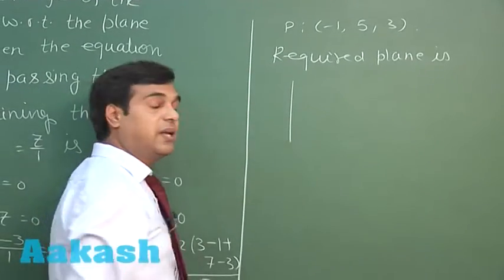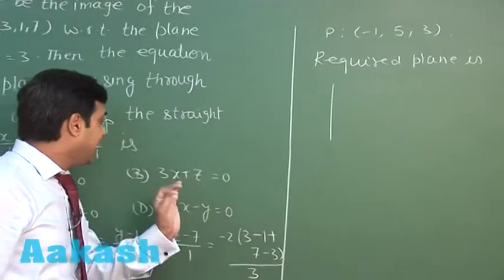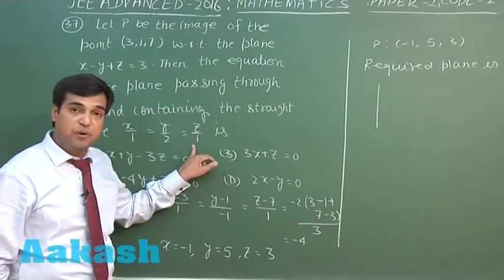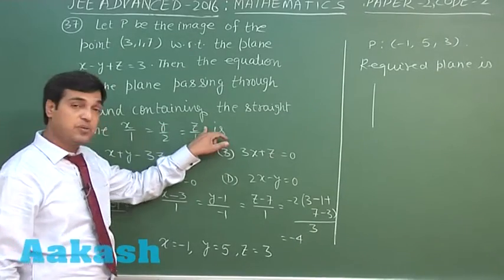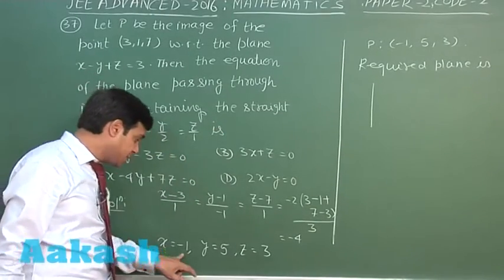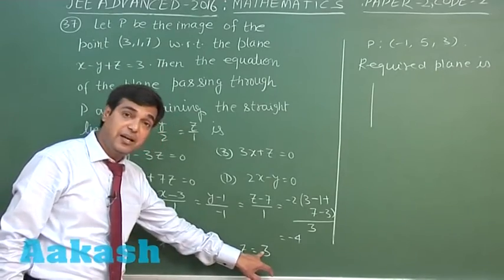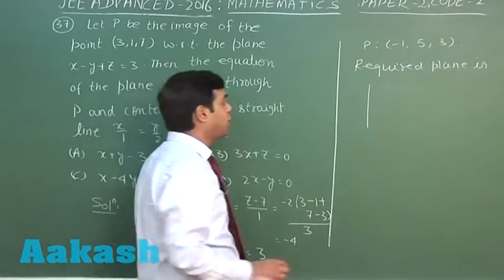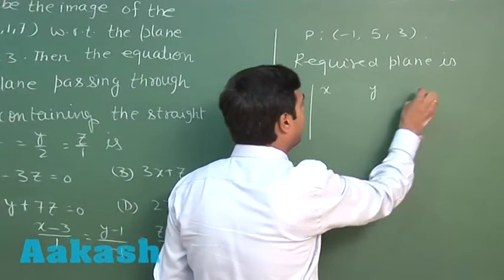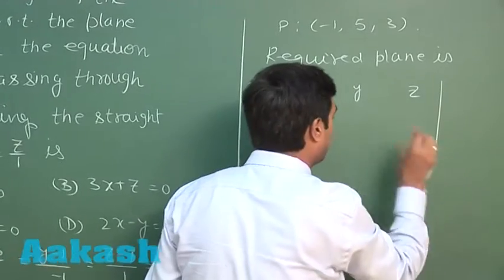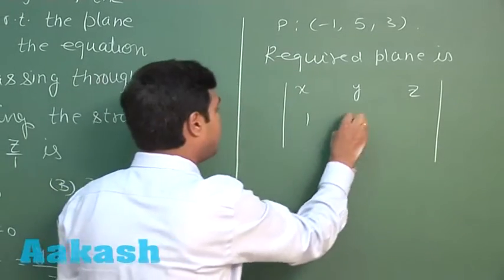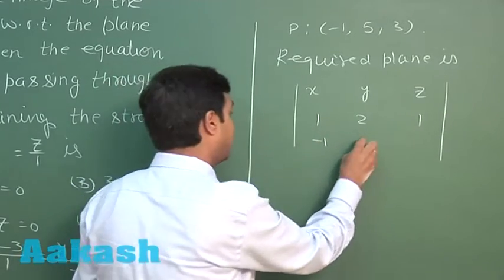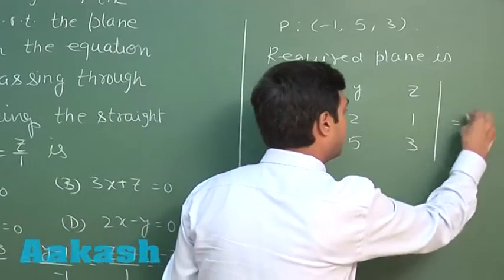The required plane contains the straight line x/1 = y/2 = z/1, meaning a point on the plane is (0, 0, 0). Another point on the plane is P = (minus 1, 5, 3), and the direction ratio of the line is 1:2:1. We can write the equation of the plane directly using the determinant form.